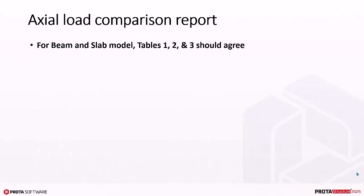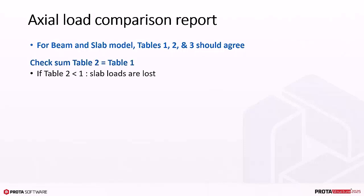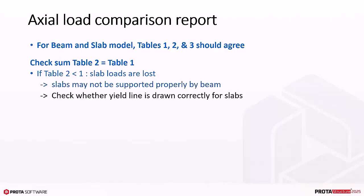For beam and slab model, Tables 1, 2, and 3 should agree. Firstly, check that the sum of Table 2 equals Table 1. If Table 2 is less than Table 1, slab loads are lost or missing. Compare values for each story to find out which story is the problem. For example, slabs may not be supported properly by beams. You can check on the plan view whether the yield line is drawn correctly for slabs.